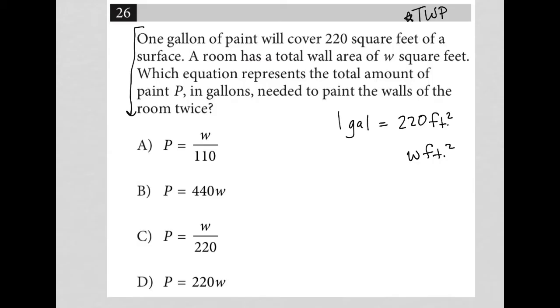So what do I know? I know that I have a room that's W square feet. I want to paint those walls twice, which means I'm going to call this like 2W. Right? Because essentially I have 2W square feet that I'm going to paint because I'm painting the room two times.